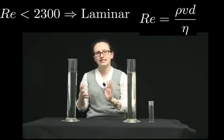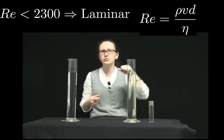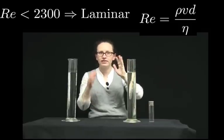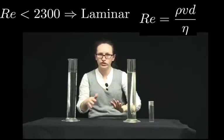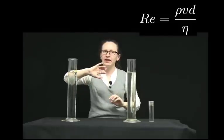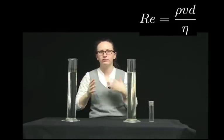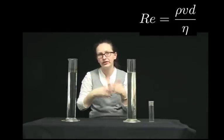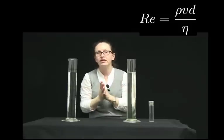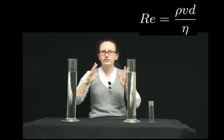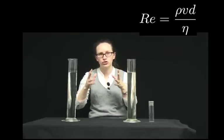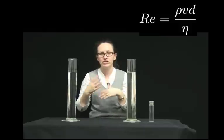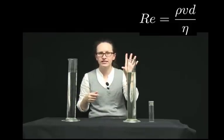If a Reynolds number is lower than 2,300, then we have a nice laminar flow — this was what happened when we just turned on that tap and the liquid was flowing out slowly. As we increase the Reynolds number by turning on the tap a little bit more and increasing the velocity, when the Reynolds number hits 2,300, we start to get a mixture of laminar flow and turbulence.